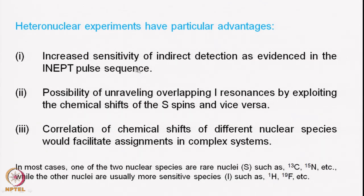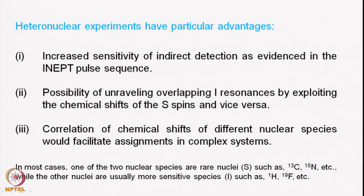Now, what are the specific advantages? First, increased sensitivity of indirect detection as evidenced in the INEPT pulse sequence. In INEPT, there is a significant advantage to the insensitive nucleus because you transfer polarization from the most sensitive nucleus. Like the proton — you transfer from proton to carbon, or from proton to nitrogen. Nitrogen is insensitive; its gyromagnetic ratio is one tenth of that of the proton, and carbon's gyromagnetic ratio is one fourth of that of the proton. Therefore, the X nucleus will have much greater sensitivity.